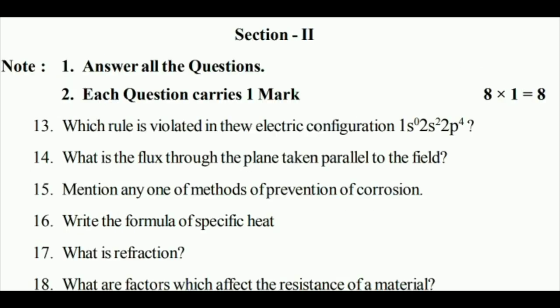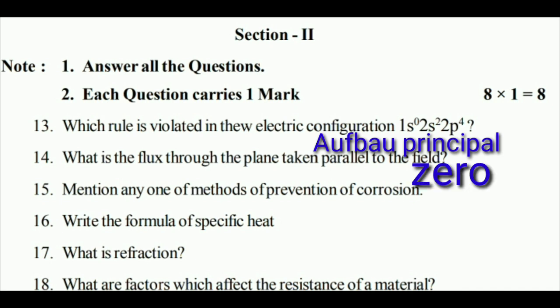Newton per meter square is equal to tesla. Which rule is violated in the electronic configuration 1s0 2s2 2p4? The 1s orbital should be filled first before 2s2 2p4, so the Aufbau principle is violated.